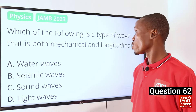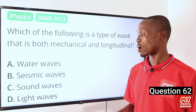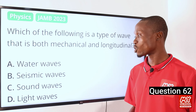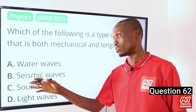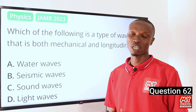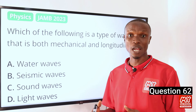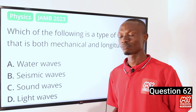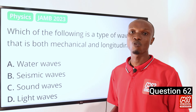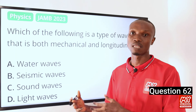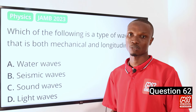Question 62. Which of the following is a type of wave that is both mechanical and longitudinal? Options: A, water waves; B, seismic waves; C, sound waves; D, light waves. The correct answer is C, sound waves. Sound waves are mechanical waves that are longitudinal, meaning the particles of the medium through which the sound wave travels, such as air or water, move back and forth in the same direction as the wave travels.